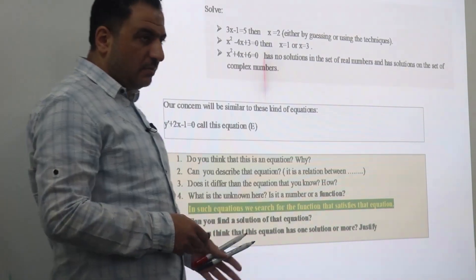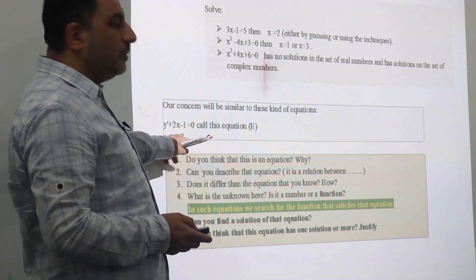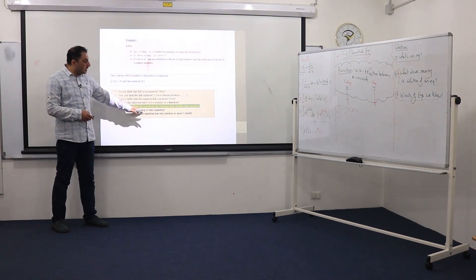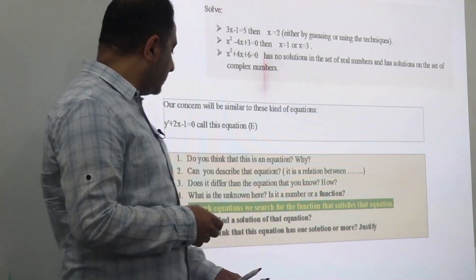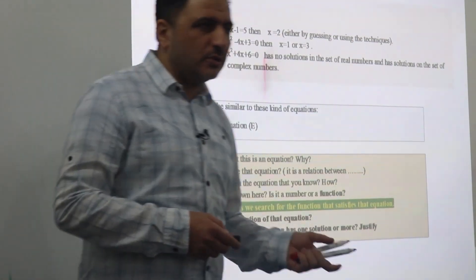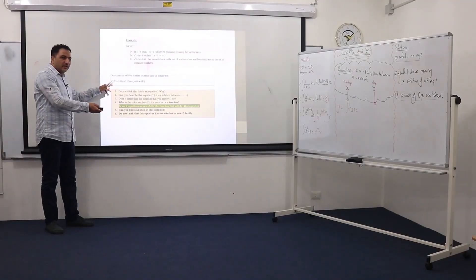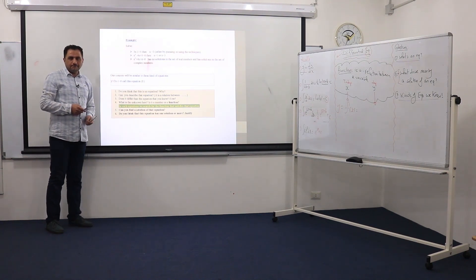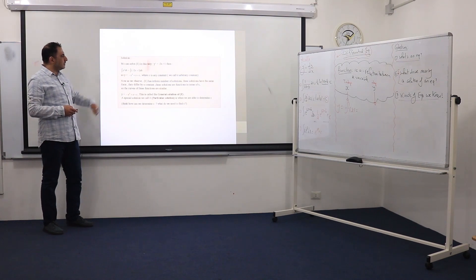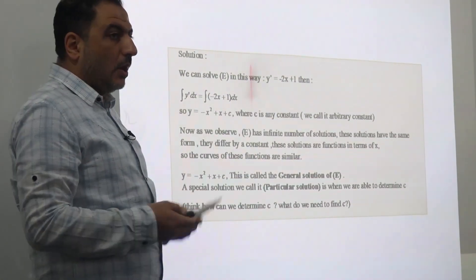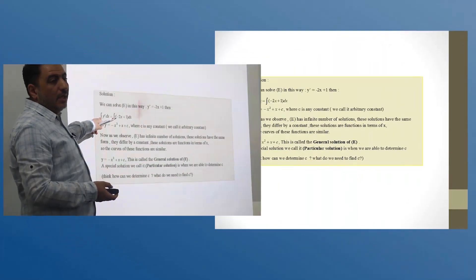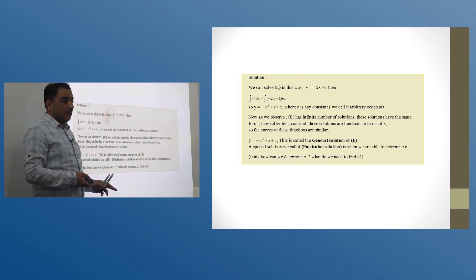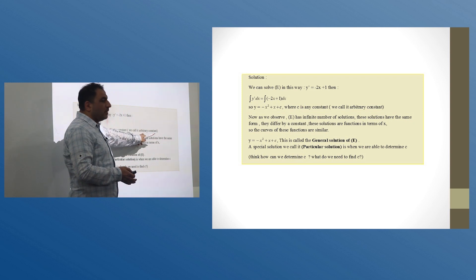What is the unknown? Is it a number? I don't think so, because if you replace any number, this equation would not be satisfied — there is a y prime here. In such equations, we search for functions. These functions are called the solution of that equation. Can you find the solution of that equation? We need a function such that its derivative plus 2x minus 1 equals 0. If y' = -2x + 1, we can find y using integration. The integral of y' dx = y, and the integral of -2x + 1 gives -x² + x + c.